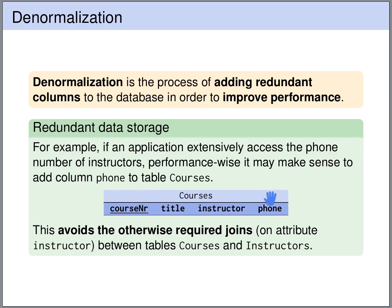So if the performance overhead of the join operations is too much because we are using the phone number too often, then we can add the phone number back to this table. We have redundant storage of information because we still have our separate table with the instructors and the phone number. But now if we want to look up the phone number for a particular course, we no longer need a join operation — we can directly retrieve this phone number from the courses table.